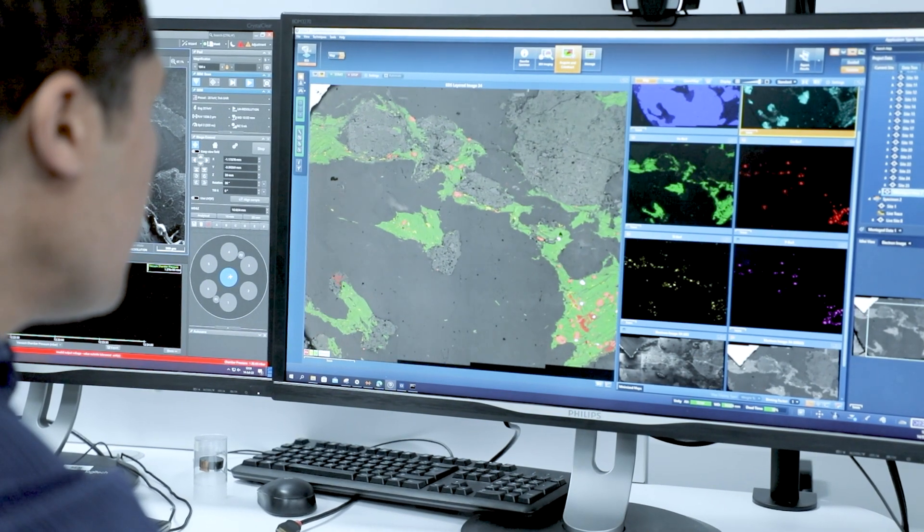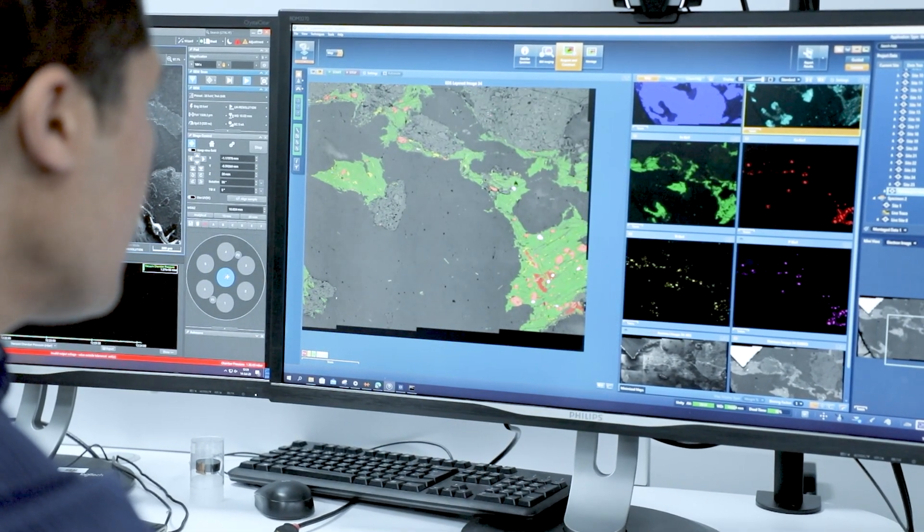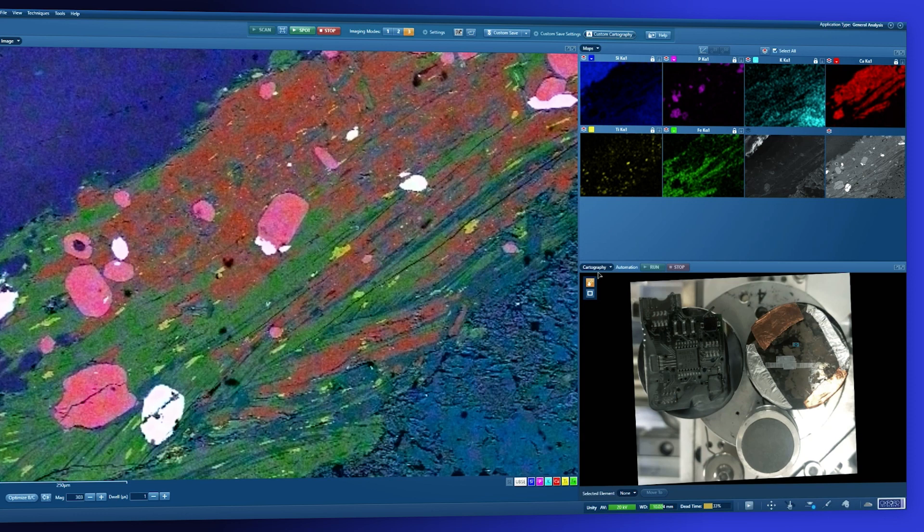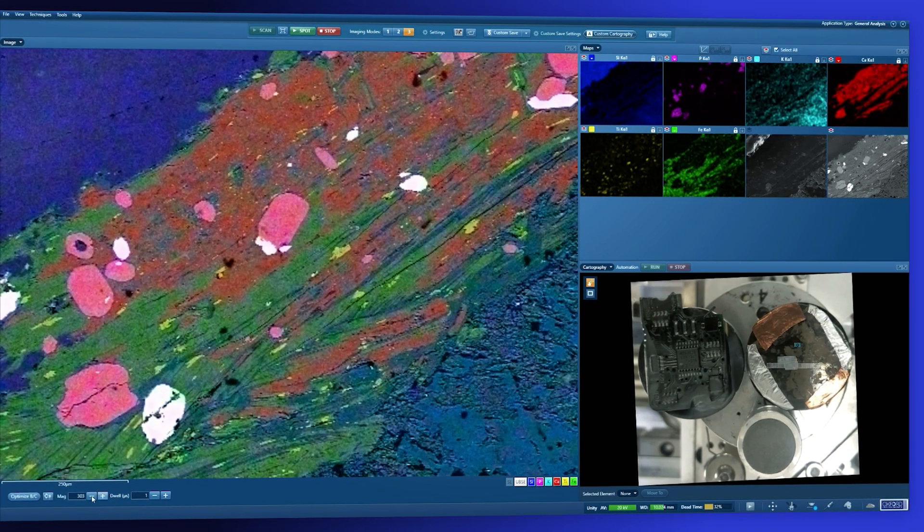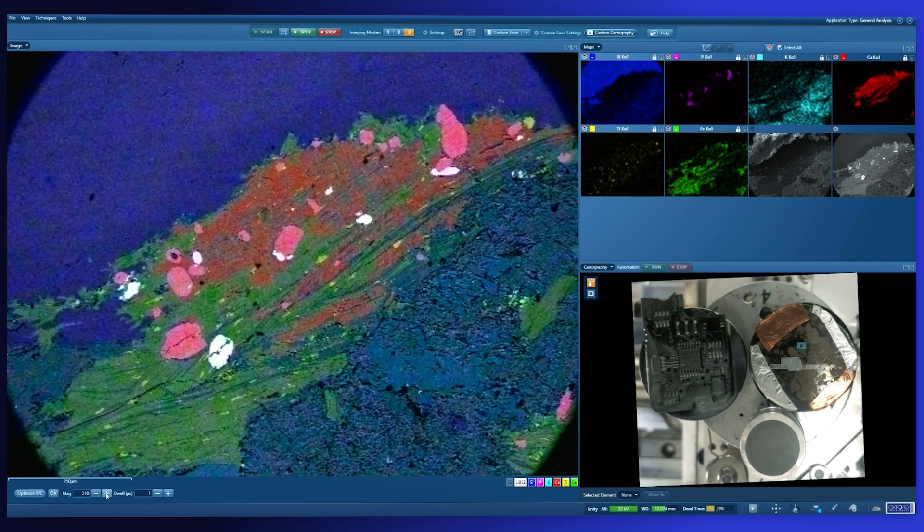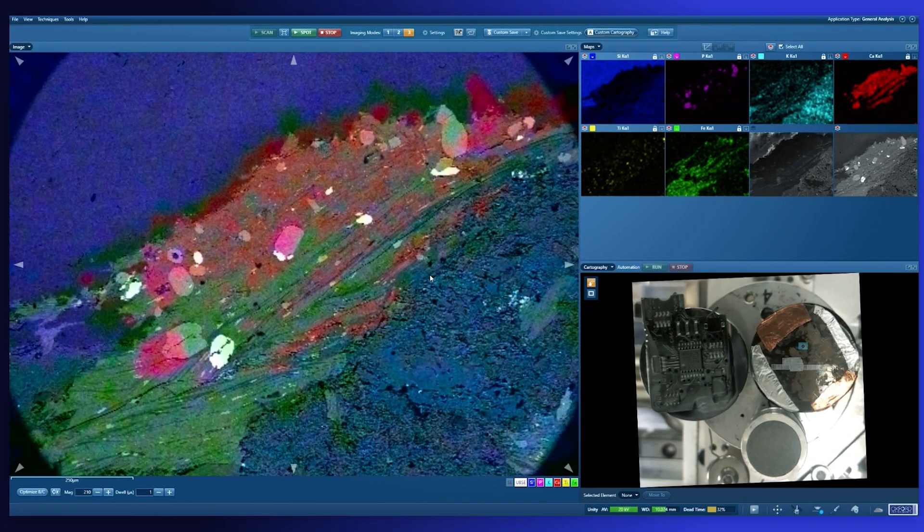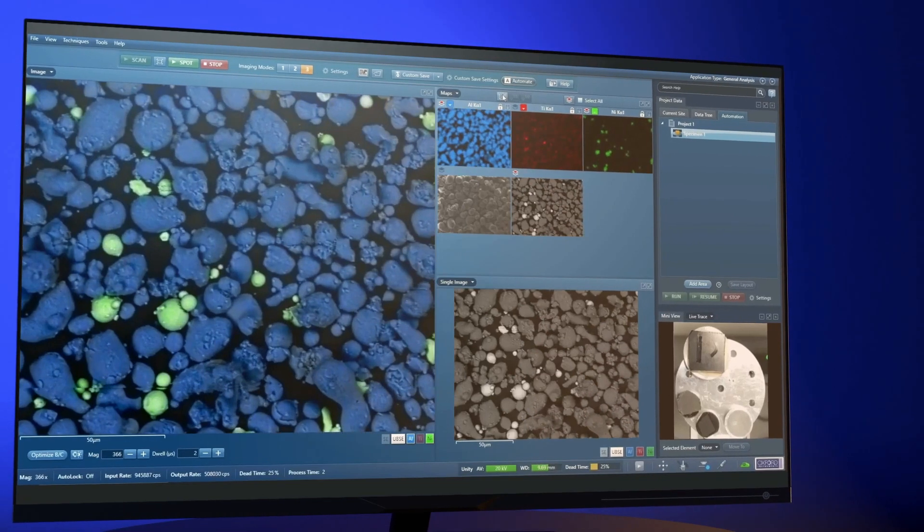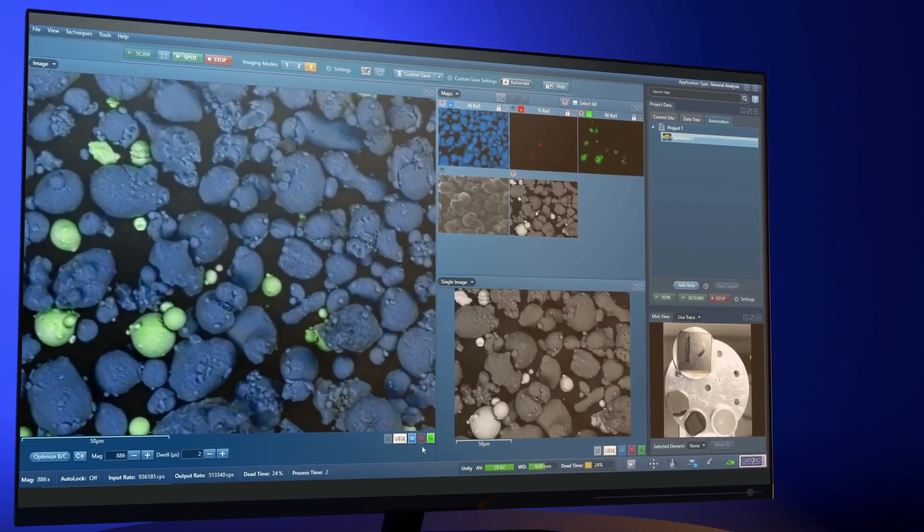On the software side, the Beck's technique is based on live chemical imaging, which we developed a few years ago, so that helped a lot. We started with this new way of working where we have elemental information live. But to bring it really to the next level and to make it really a new technique, it needed hardware development, which is the Beck's detector, but software development as well. Because we have multiple sensors at the same time, there was also lots of development.